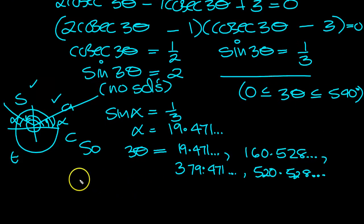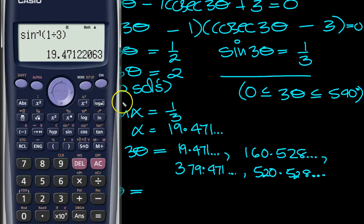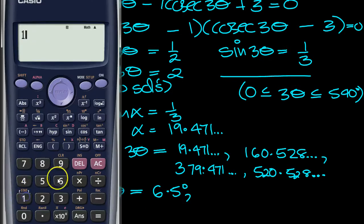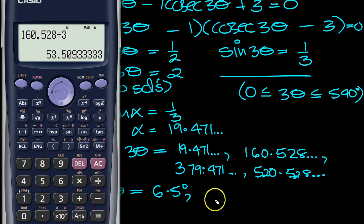Now we just need to divide by 3 to get theta. Theta equals 19.471 divide by 3, which is 6.5 to 1 decimal place, 6.5 degrees. Next one is 160.528 divide by 3, and that's 53.5 degrees.